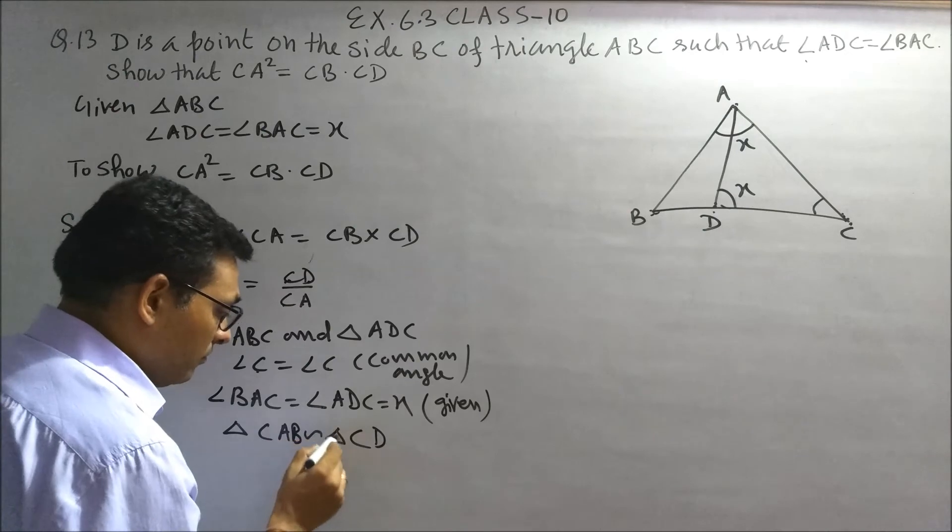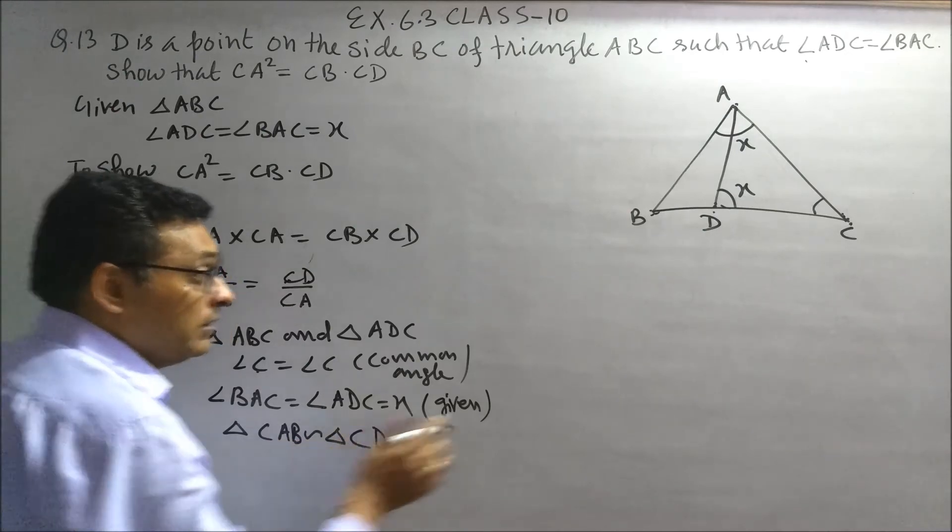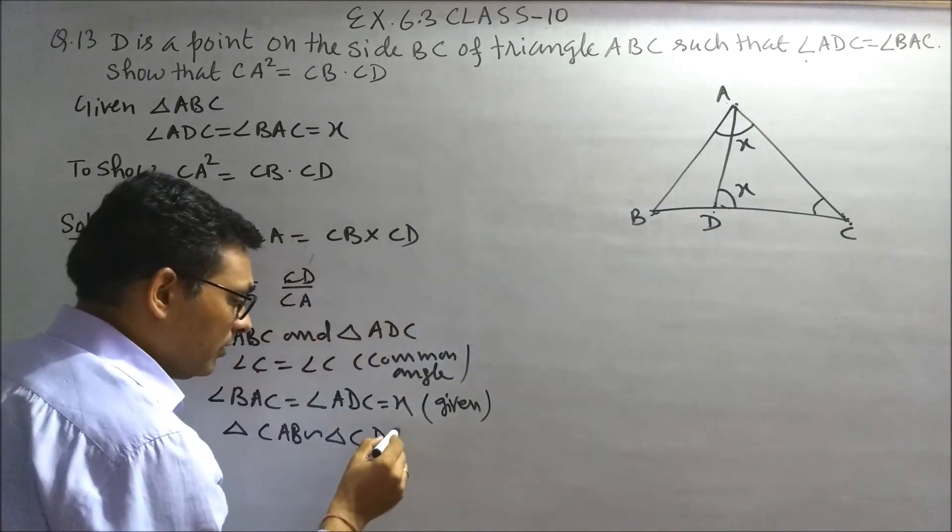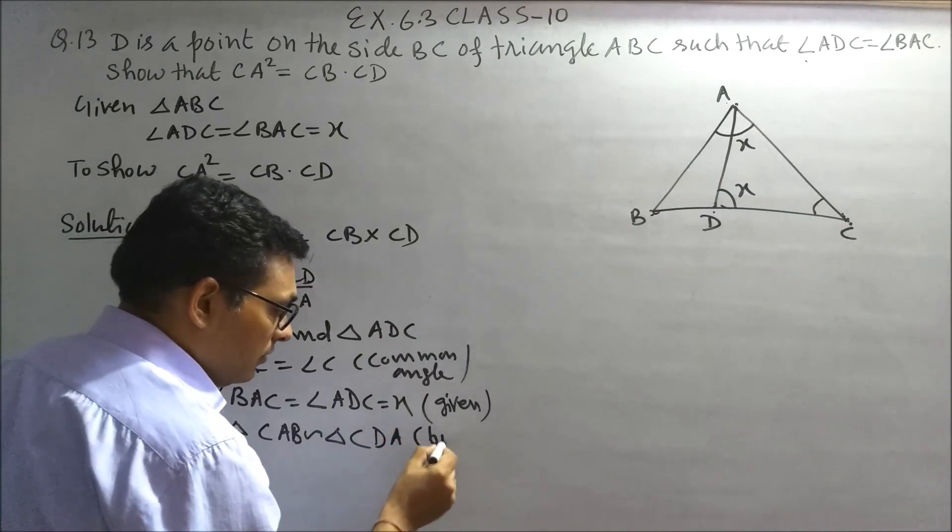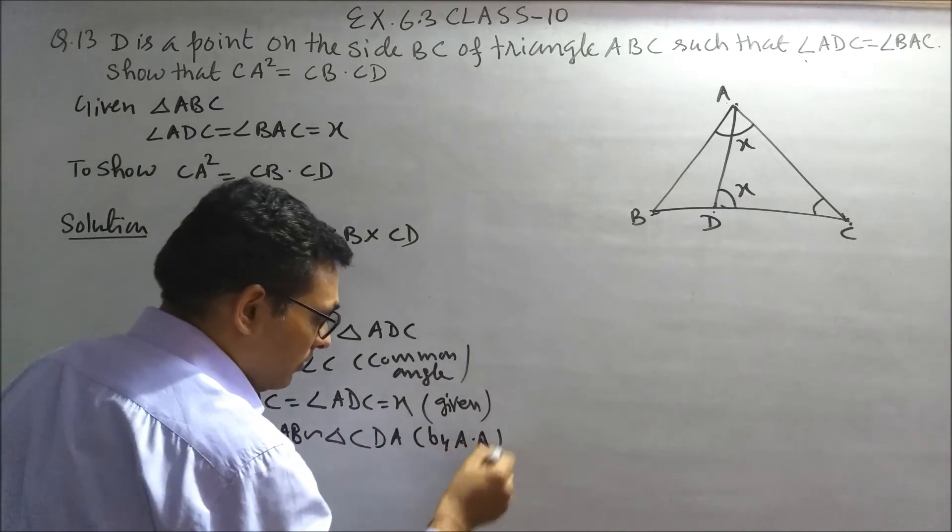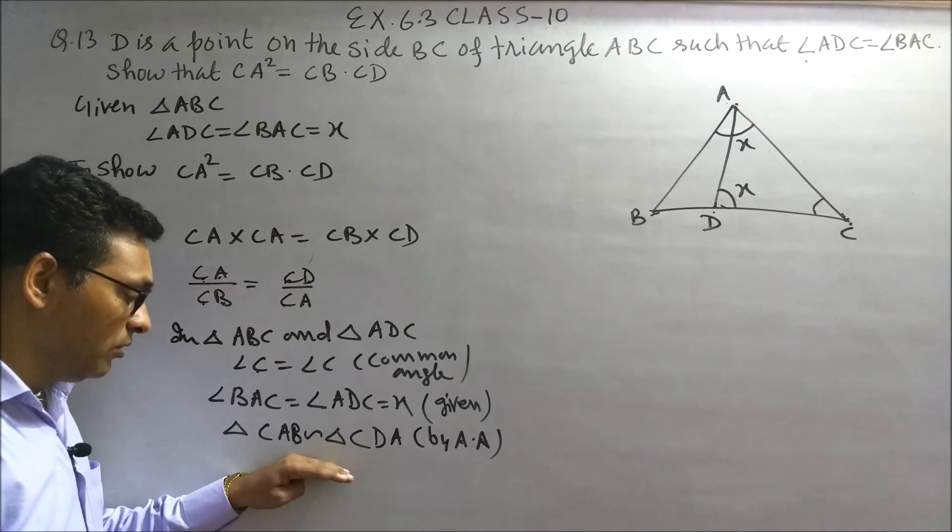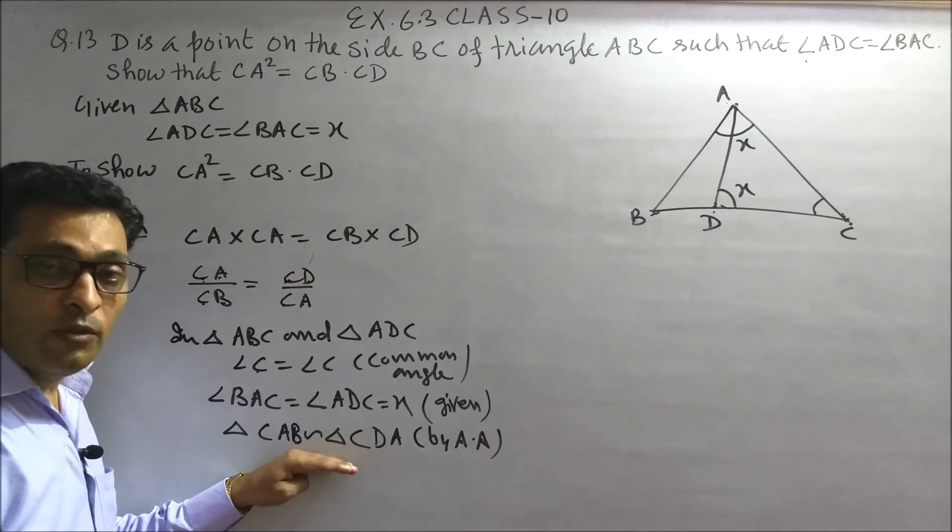Similar triangles by AA criteria. When naming is correct, then the ratios will also come out correct.